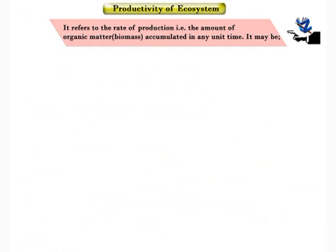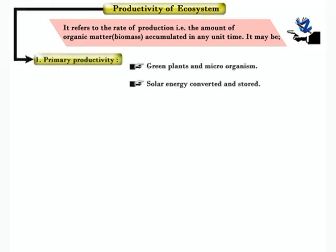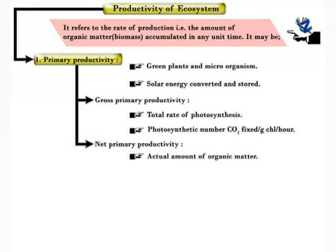Productivity of an ecosystem refers to the rate of production — that is, the amount of organic matter or biomass accumulated in any unit of time. Primary productivity is associated with green plants or microorganisms. It is the rate at which radiant (solar) energy is converted and stored by producers. It is classified into gross primary productivity — the total rate of photosynthesis, estimated in terms of chlorophyll content or photosynthetic number as CO2 fixed per gram chlorophyll per hour — and net primary productivity, which is the actual amount of organic matter stored by green plants apart from its use in respiration.